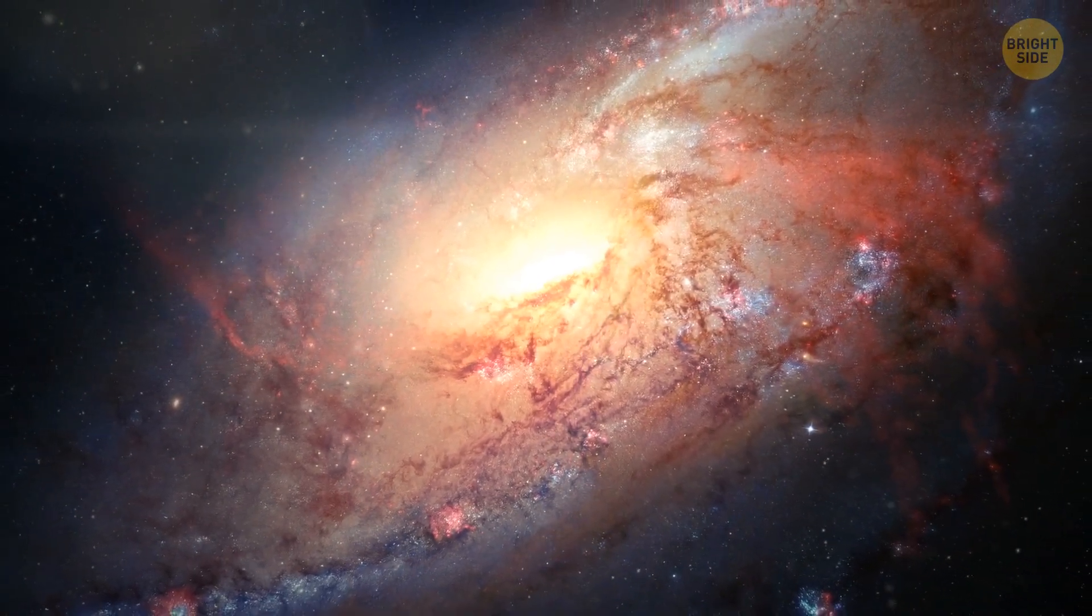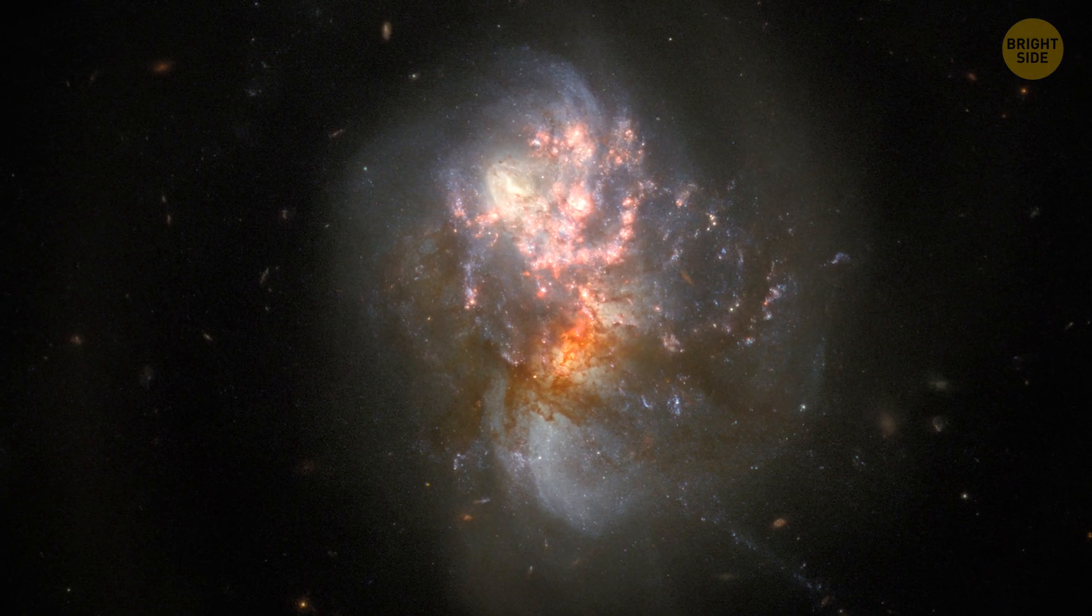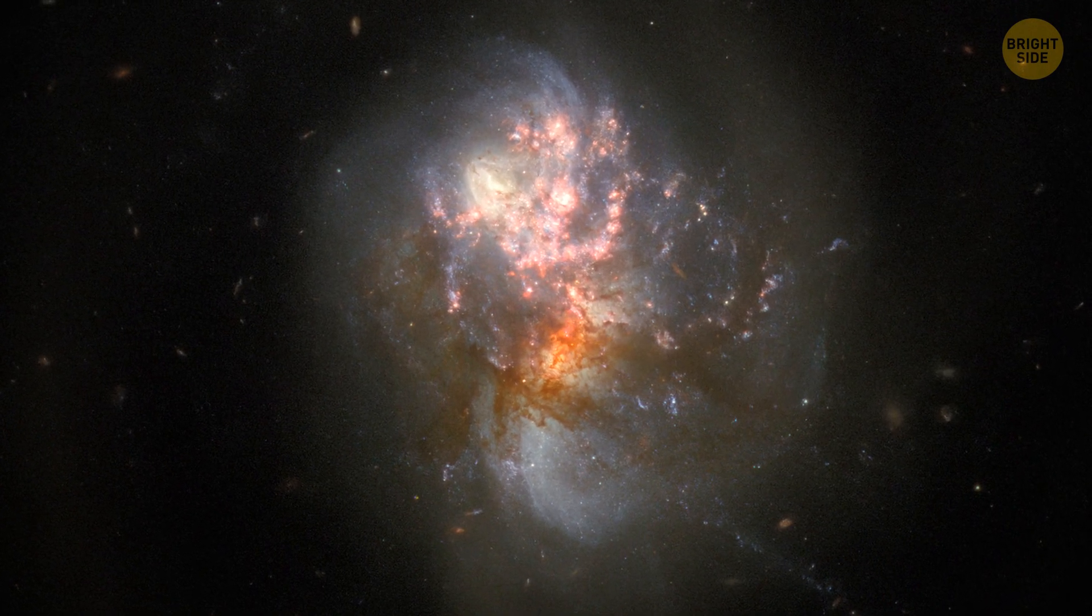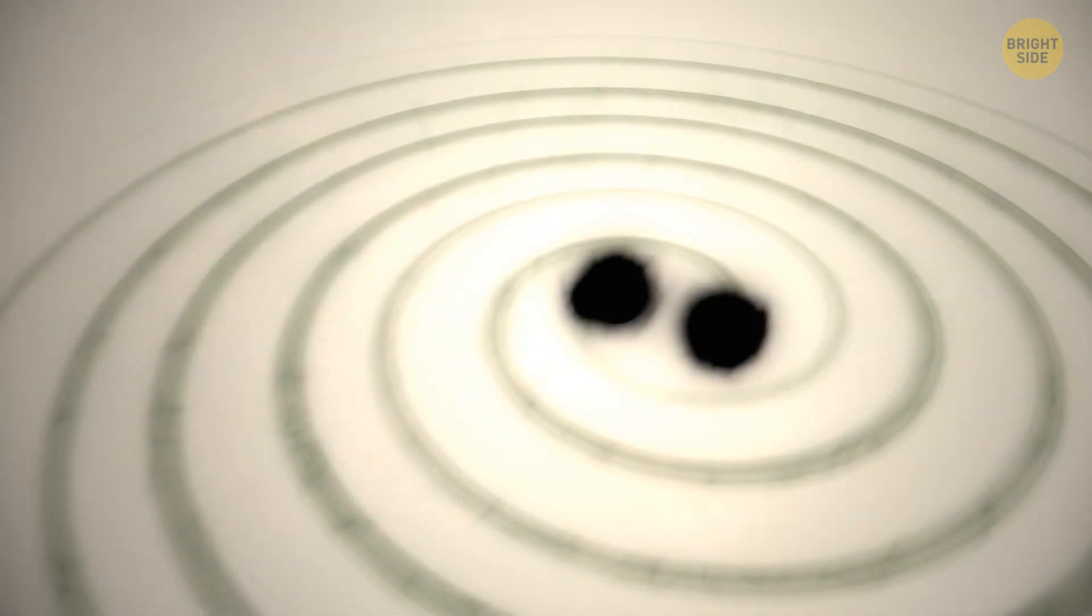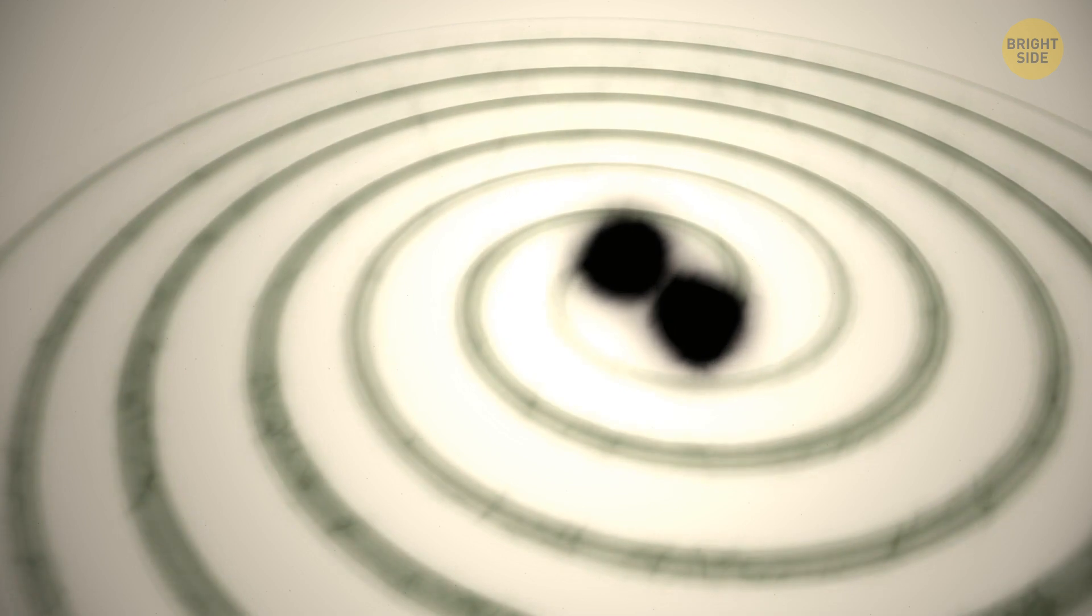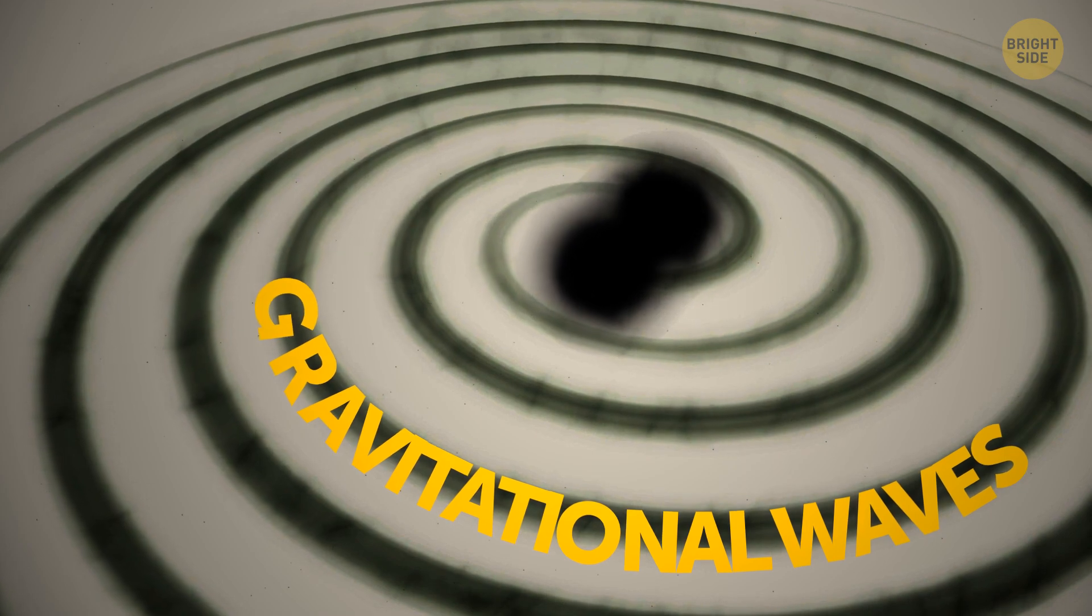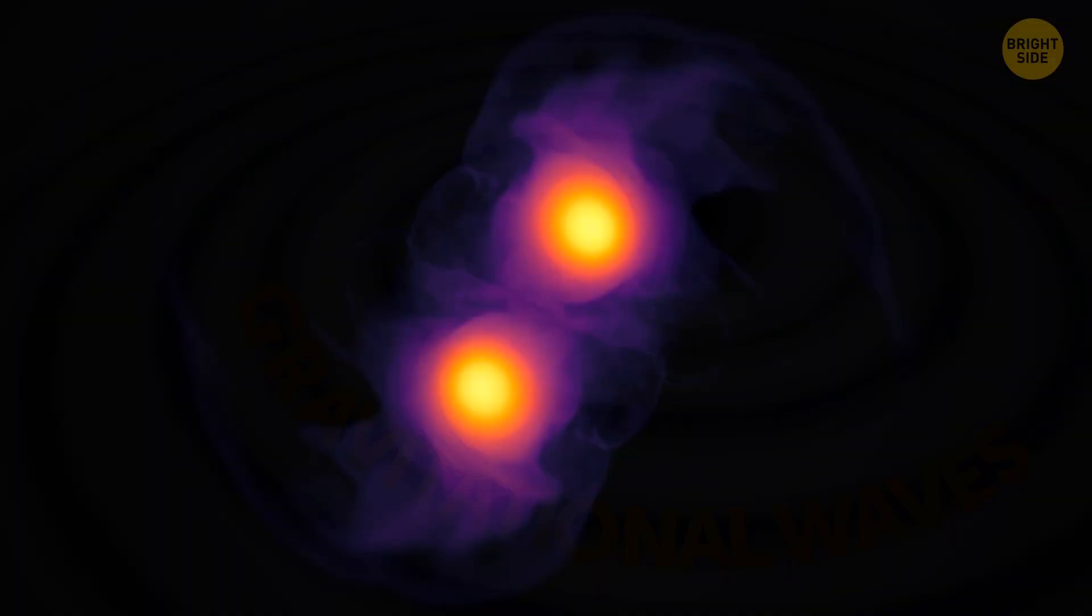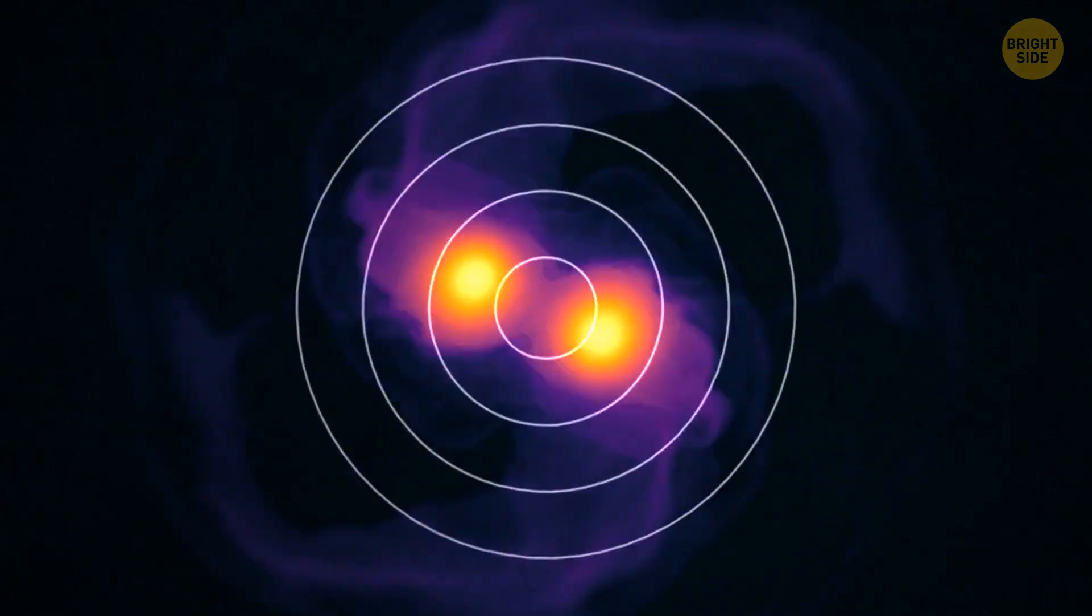Galaxy mergers are way more common in the distant universe than in our neighborhood. And this discovery may mean that such black hole binaries are likely to be much more common than we previously thought. And if pairs of black holes are so common, it might make it easier for us to study gravitational waves. These waves, also known as ripples in space-time, occur when black holes collide.